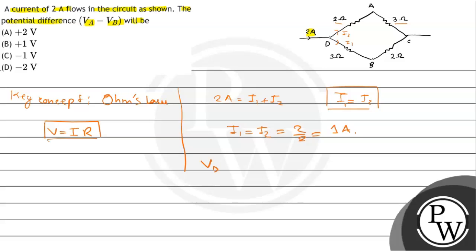Now, Vd minus Va equals 2 (the resistance) times 1 (the current), which equals 2 volts.